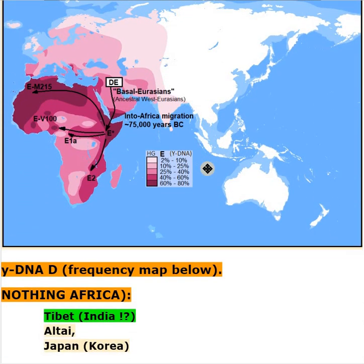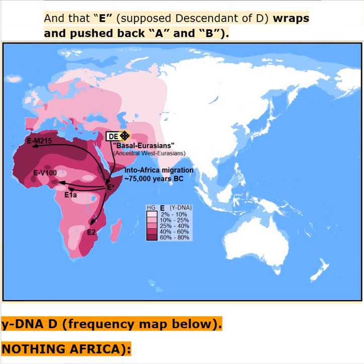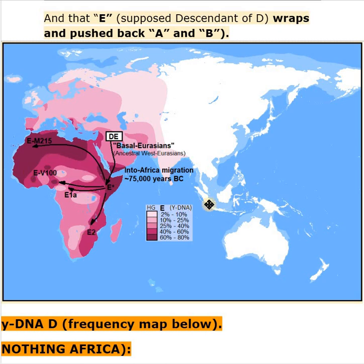I will try to convince you that E — the supposed descendant of D — wrapped and pushed back A and B that are typical African. This is the frequency map of E. Don't let the DE label confuse you, it's about Y-DNA E. E covers much more of Africa than A and certainly B do — I guess it's about 10 times more.